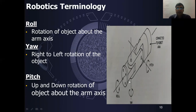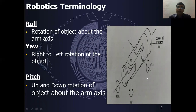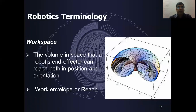Yaw refers to the axis of right-to-left rotation. The third orientation angle is pitch — the up and down movement. These three angles — roll, pitch and yaw — define the angular positions of the robot's orientation. The next term is Workspace — the space the robot end effector can reach in both position and orientation.